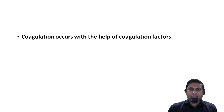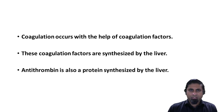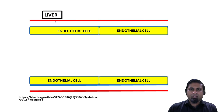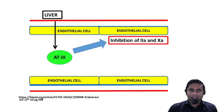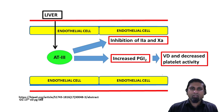Coagulation occurs with the help of coagulation factors which are synthesized from the liver. Antithrombin is a protein which is also synthesized by the liver. Antithrombin is going to inhibit factor 2a and factor 10a. It also potentiates prostacyclin or PGI2, which is responsible for vasodilatation as well as inhibition of platelet activity.